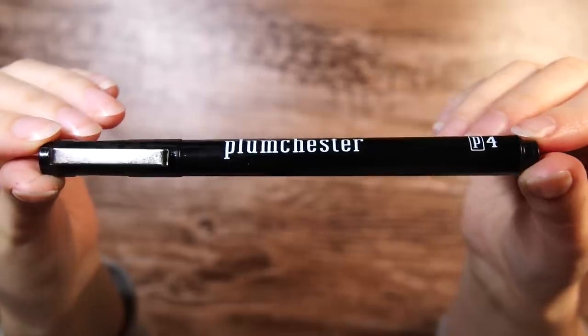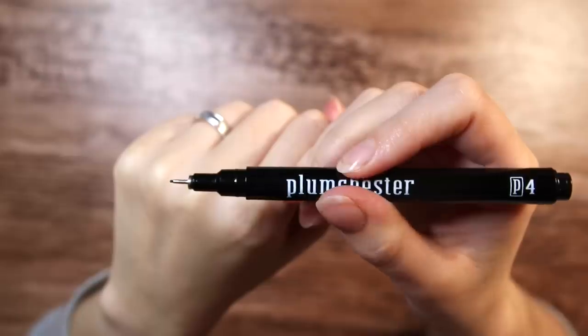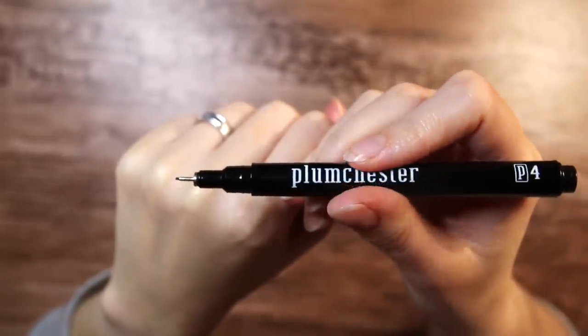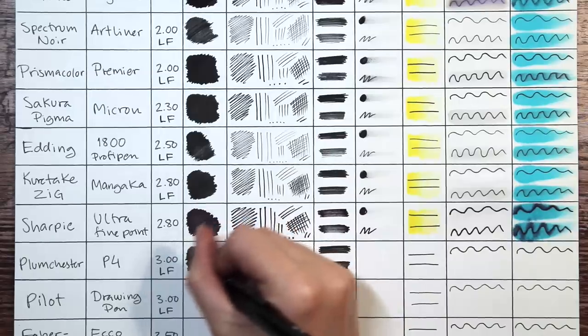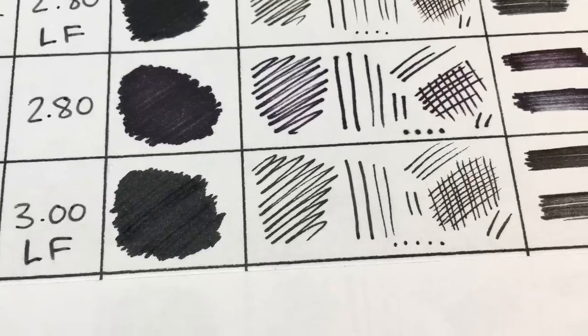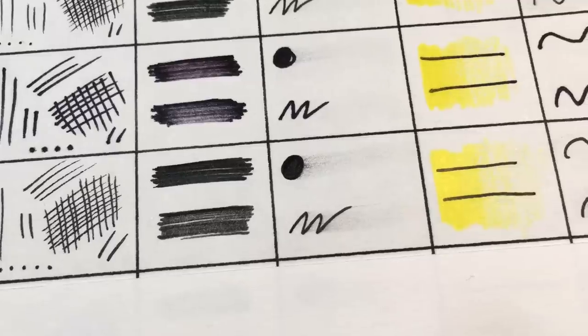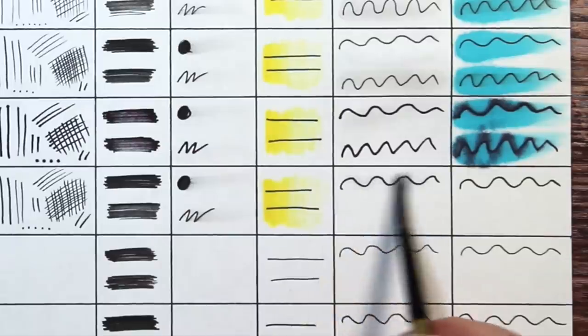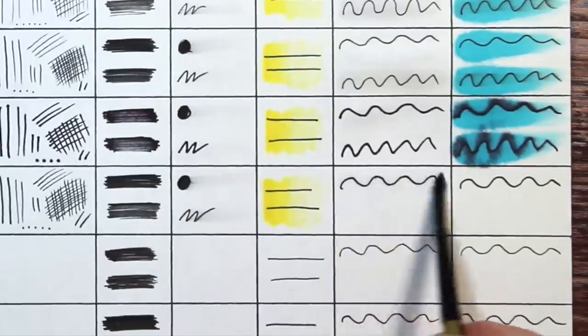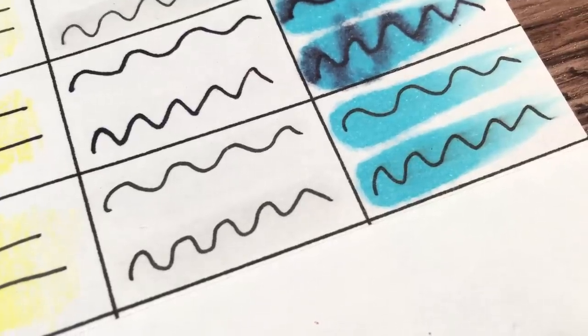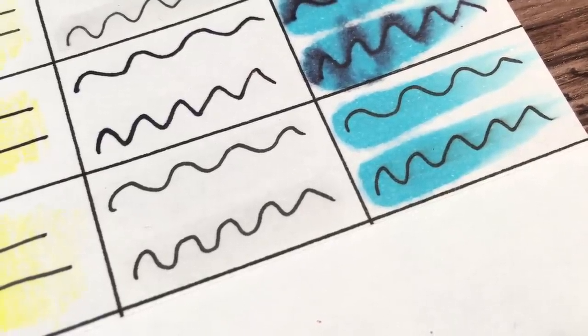Then we have the Plumchester P4 for about $3 and it's lightfast. The ink looks pretty pigmented with just a few pen strokes visible. It fades a little in the eraser test but it gets full score on the water test with just the slightest hint of smudging in the fresh line test. It also passes on the alcohol marker test.